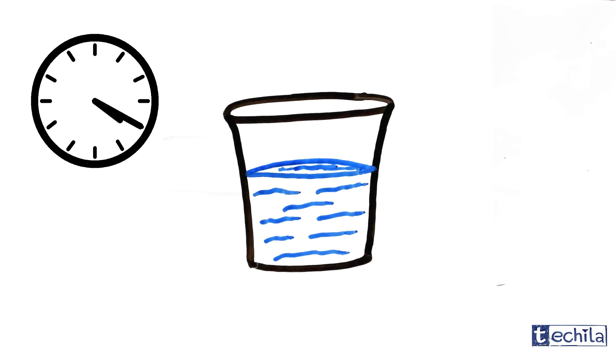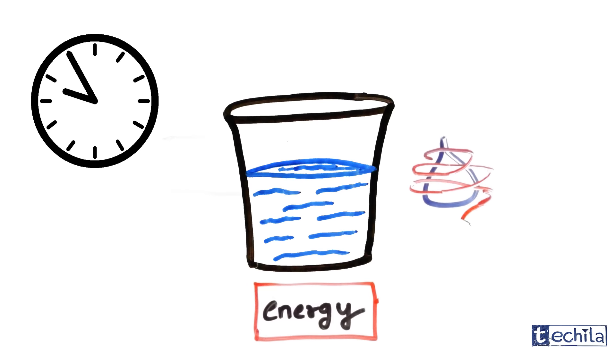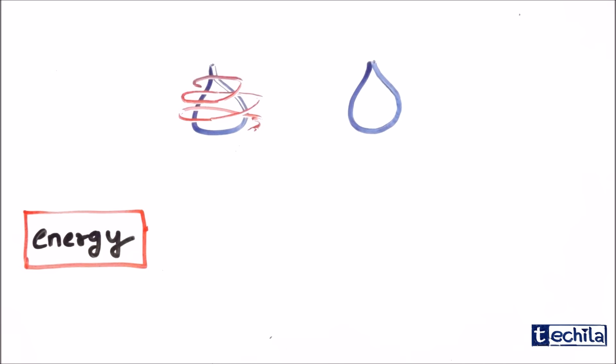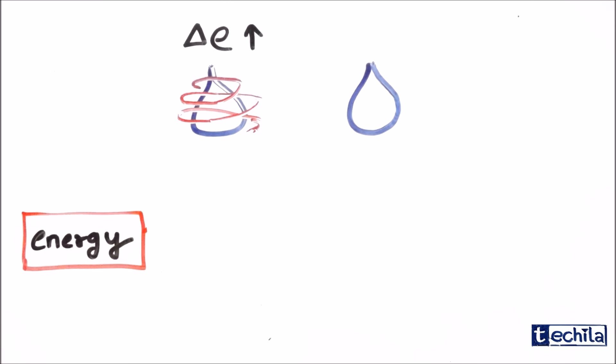After some time, if we stop heating, the external supply of energy cuts off, but the rate of interaction between the molecules remains high. Hence, in the initial stages of cooling, the transfer of energy between the molecules and into the surrounding is more.